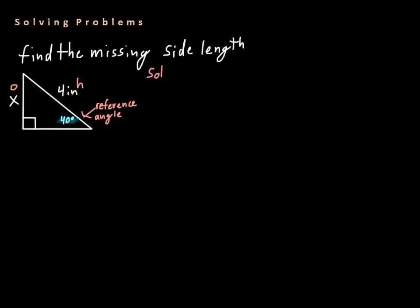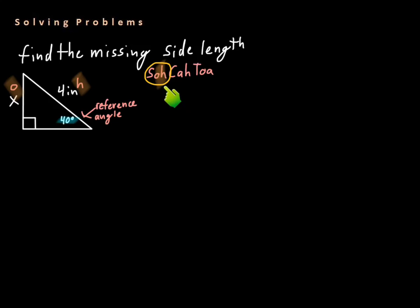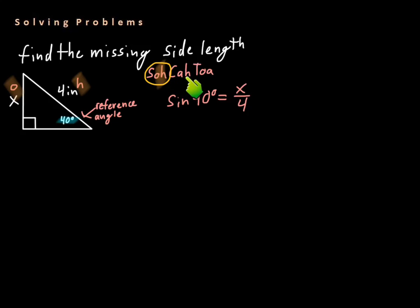Now that we know we have the hypotenuse and we're looking for the opposite side, we can figure out which ratio to use. Using SOHCAHTOA, we have O and H, and we can see that SOH has O and H in it. So we set up our ratio: sine 40 degrees equals X over 4, because sine equals opposite over hypotenuse. Sine equals opposite over hypotenuse; cosine is adjacent over hypotenuse; and tangent is opposite over adjacent. So sine 40 degrees equals X, our opposite, over 4, our hypotenuse.